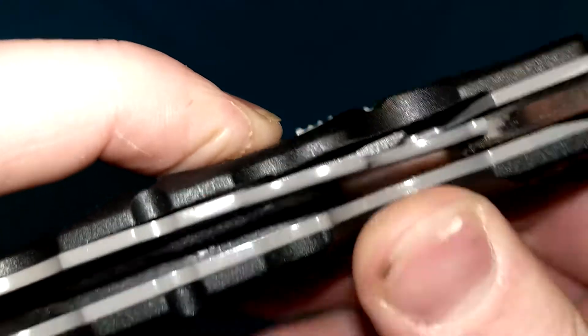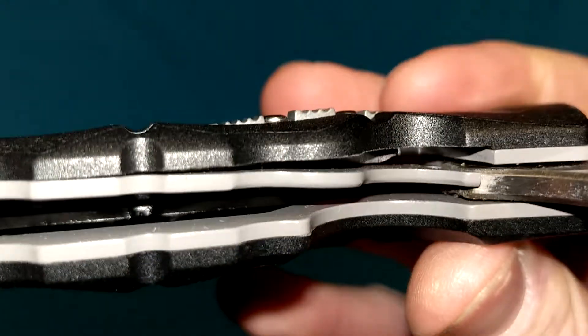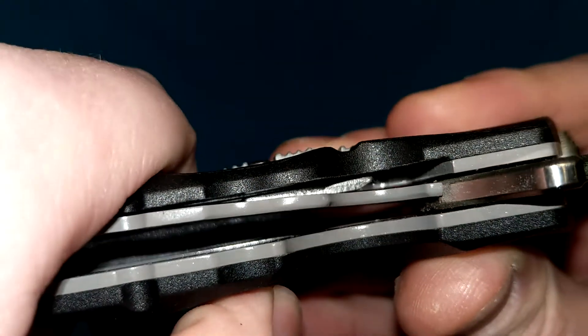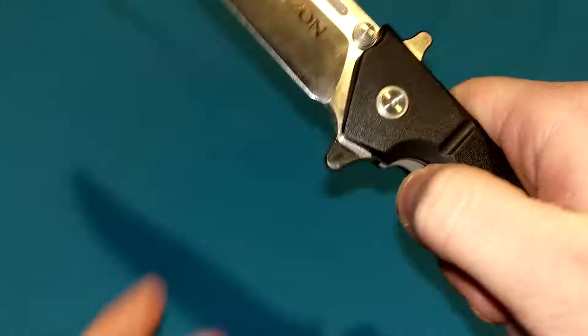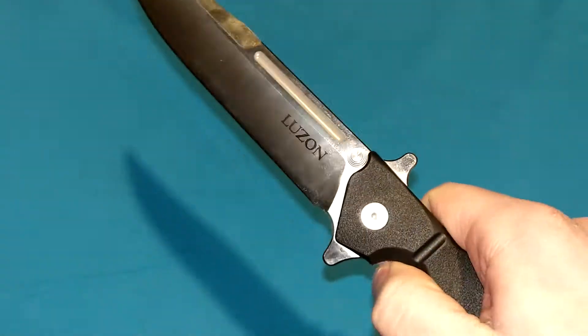It literally just becomes a thick metal bar, a thick metal obstruction. It's about the same thickness, if not a little bit thicker, than the steel liner itself that gets in the way of the liner. I cannot disengage this.